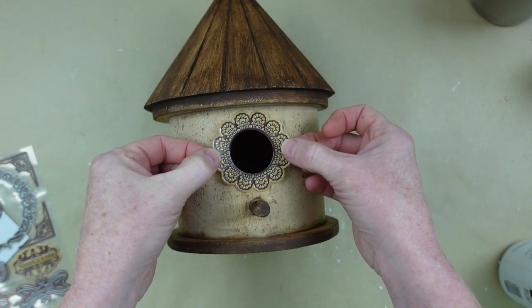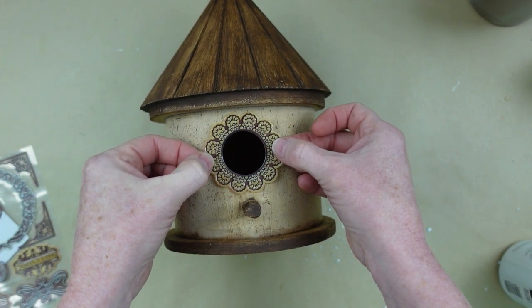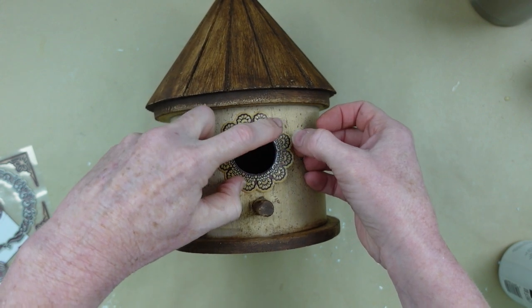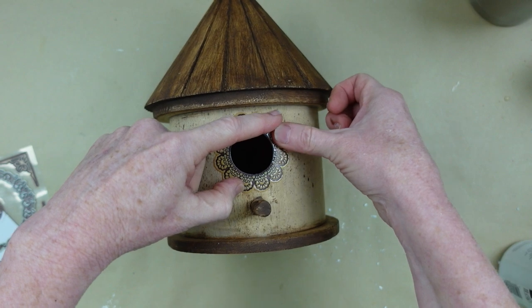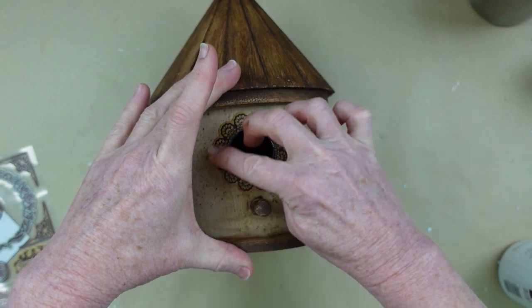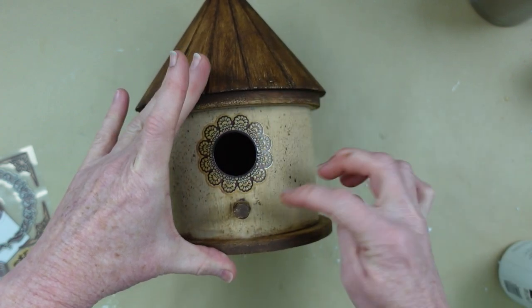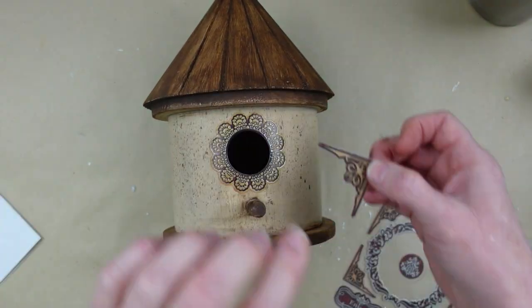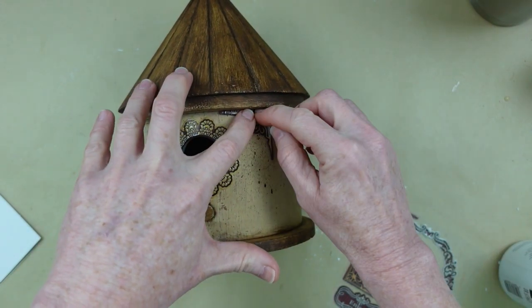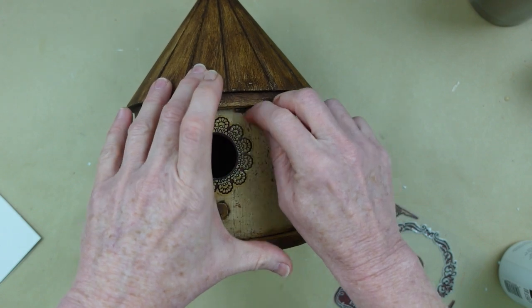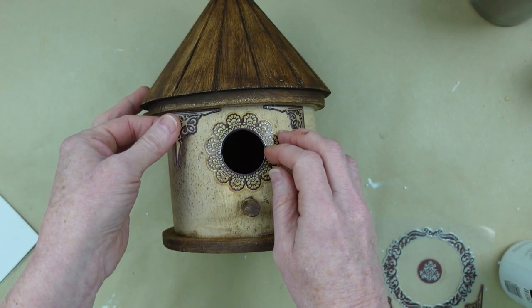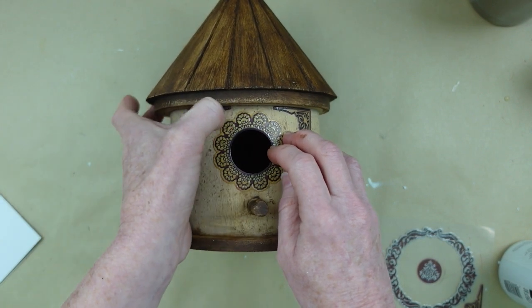Alright so these stickers came from Dollar Tree. They have a bunch of these kinds. They're kind of different styles but they're raised and I really enjoy the look of this and it fits perfectly around the little opening to the birdhouse. Is that not the cutest little cottagecore birdhouse you've ever seen? But wait it gets better. I'm gonna take these little corner pieces and just kind of give it a little extra something. You don't have to do this if you don't want to but I think this is really cute.